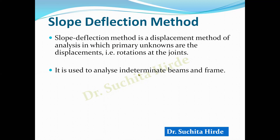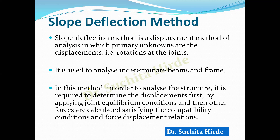This method is used to analyze indeterminate beams and portal frames. In order to analyze the structure, we must determine the displacements first — the rotations theta at the joints. These can be calculated by applying joint equilibrium conditions. In a displacement method, we always use joint equilibrium equations to calculate the displacements first.